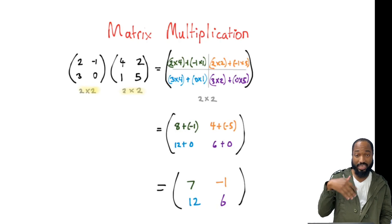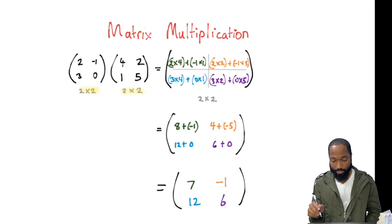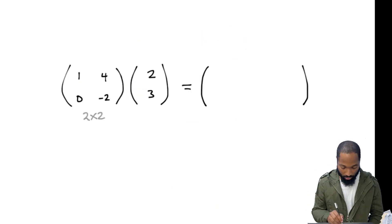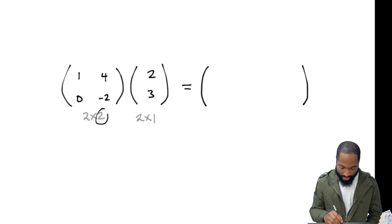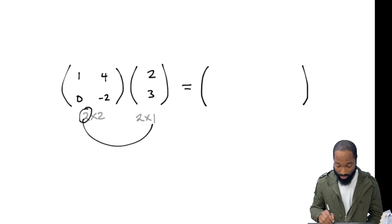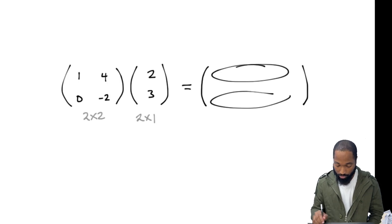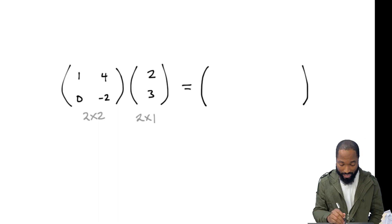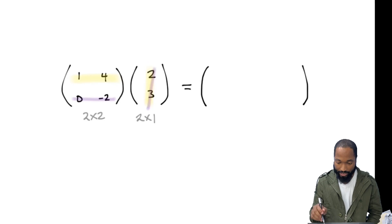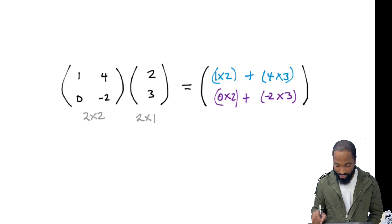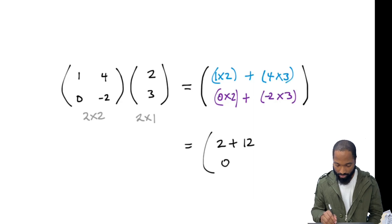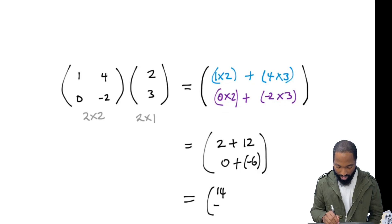This is one style of multiplication. There's another type — what if we had a 2 by 2 multiplied by a 2 by 1 (2 rows, 1 column)? Let's verify those two inner numbers are the same so multiplication can take place — the answer is going to be a 2 by 1 matrix with 2 rows but just 1 column. Row by column: 1 times 2 plus 4 times 3, that's one element. Then 0 times 2 plus negative 2 times 3 is another element. That gives us 2 plus 12 equals 14, and 0 plus negative 6 equals negative 6.